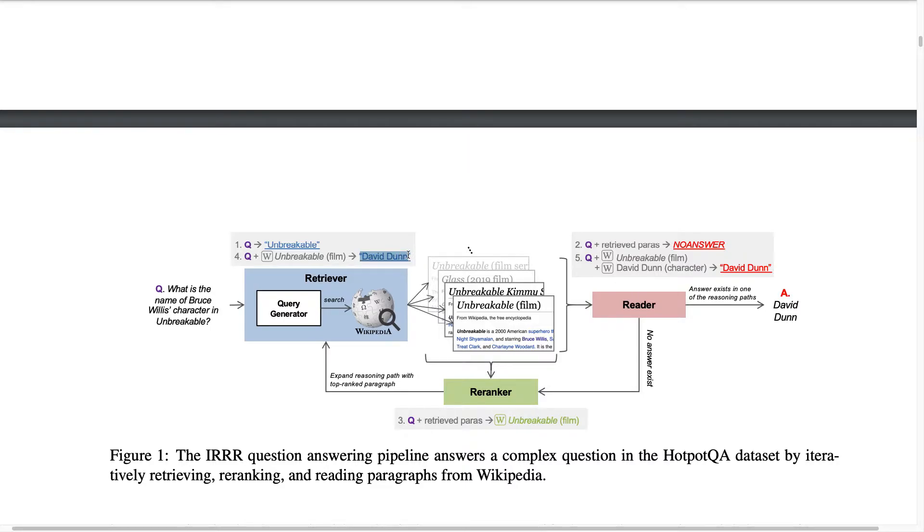And then we repeat the process of adding this new paragraph and then inputting to the reader and then hopefully now the updated information allows the reader to come up with the answer which is David Dunn here and this finishes the process. Once the reader is capable of outputting an answer which is different from no answer we can stop because we have found an answer which the model thinks is satisfactory and we can return that to the user.